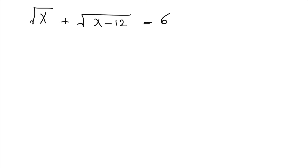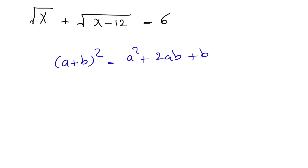Obviously we have the square root, and in order to get rid of the square root, one easy way is to square each side of the equation. The algebra formula we have is (a + b)² which equals a² + 2ab + b². When we have a negative sign it would be negative, but that's not the case here — we have a plus sign.